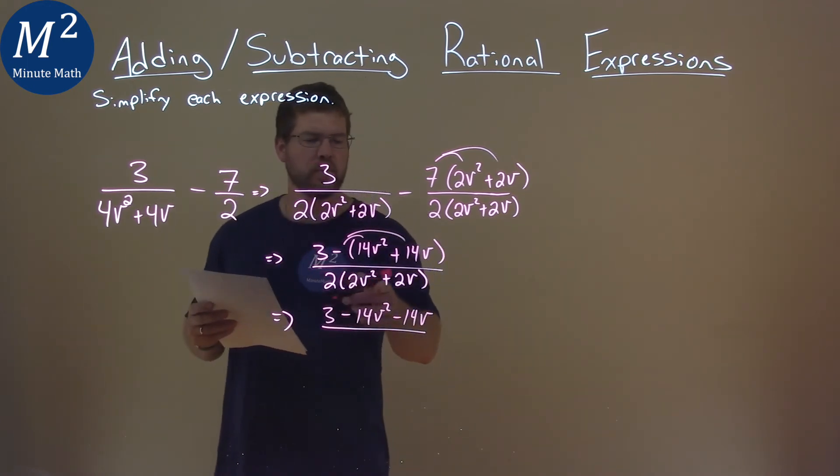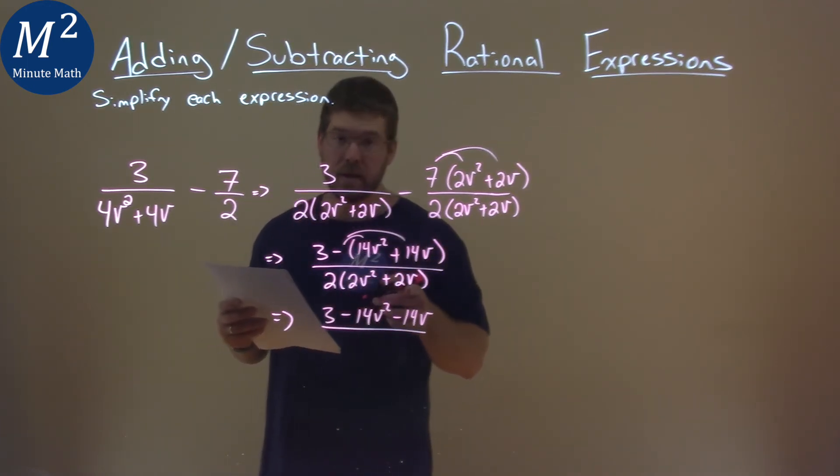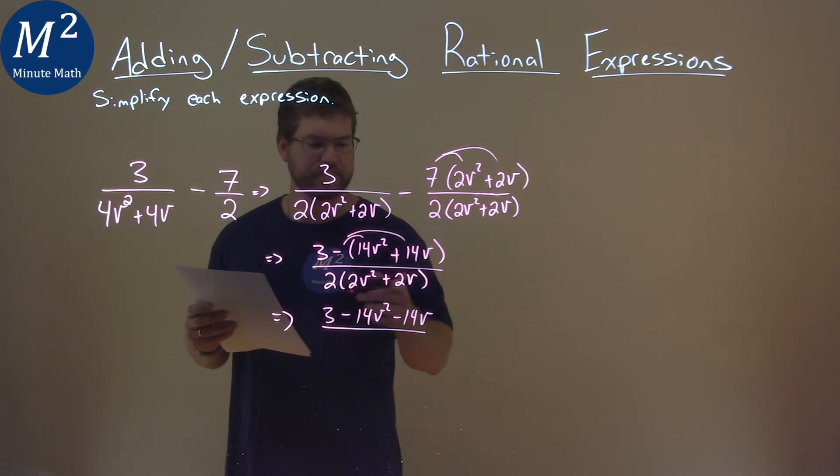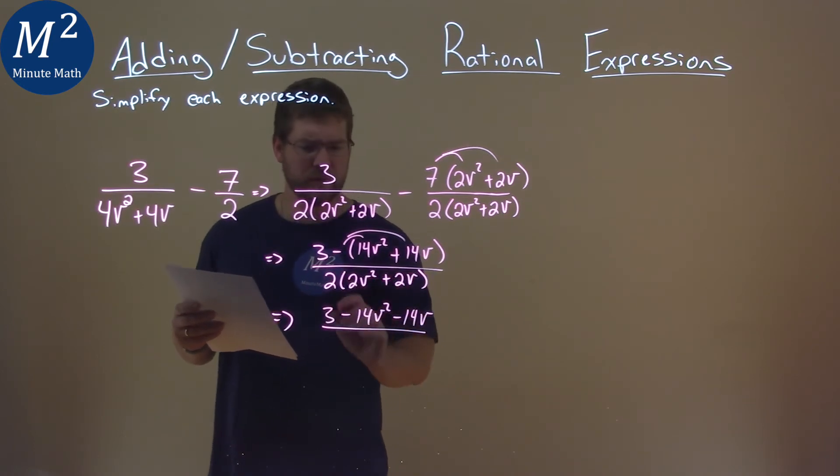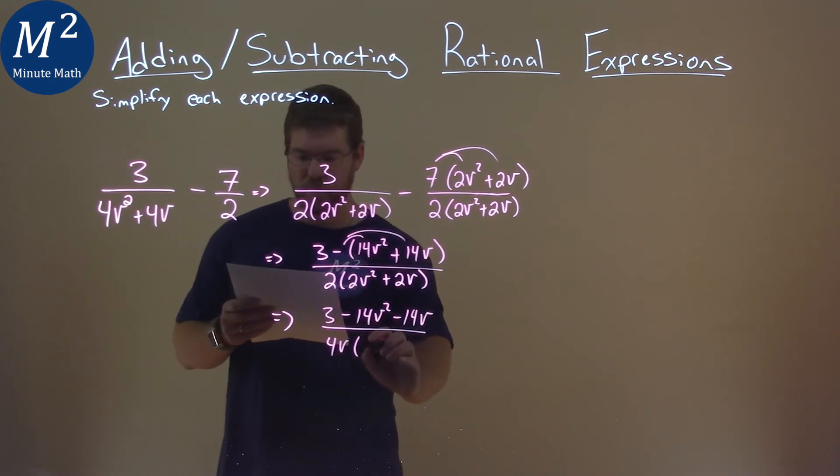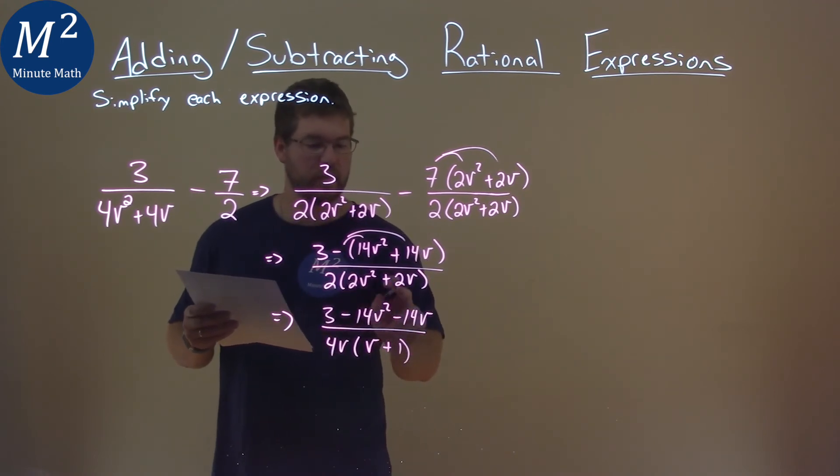The denominator, I can still pull out a 2v here from the denominator. So I pull out a 2v and I multiply by 2, I got 4v. And I'm left with just 1v here, and then plus 1. Remember, we're pulling out that 2v from both parts here.